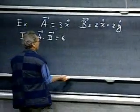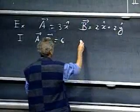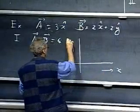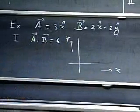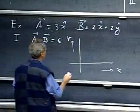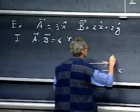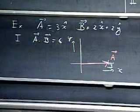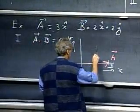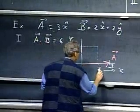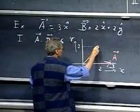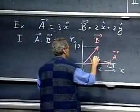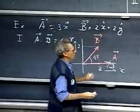You could have done it that way. It's a little bit more complicated, but I certainly want to show you that it works. If this is the X direction and this is the Y direction, we don't have to look into the Z direction, because there is no Z component, then this would be vector A, and this point would be at 3. B... this would be 2, and this would be 2, and so this would be the vector B. And it's immediately clear now that this angle is 45 degrees. That follows from the 2 and the 2.